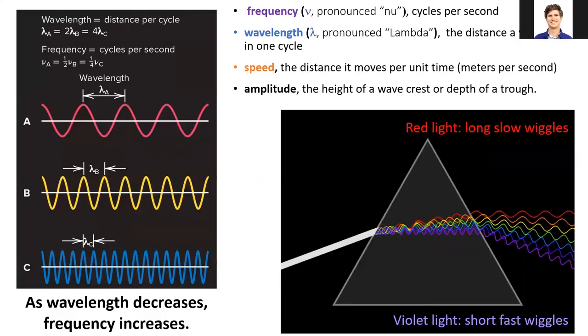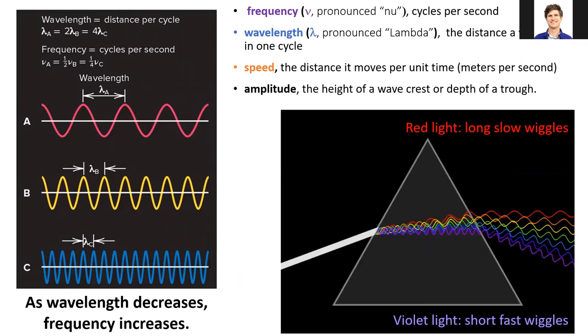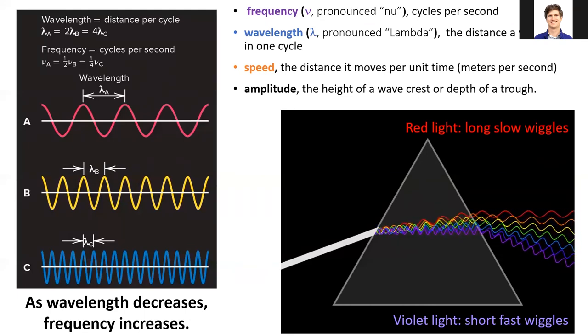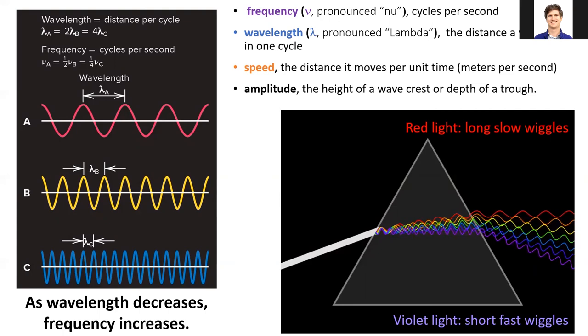While this concludes my introductory lecture on light, I'm going to let this animation play out for a bit. I'd like you to notice that the waves on the right side of the prism travel at the same speed, but the red waves with the long wavelength have a lower frequency than the violet waves do.